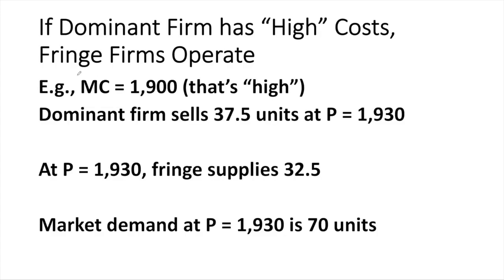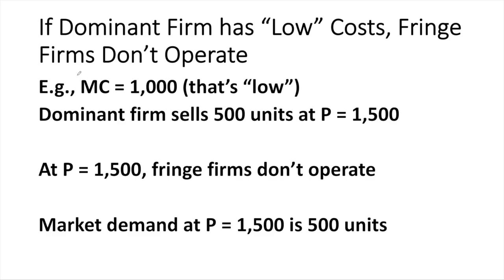To summarize: if the dominant firm operates at high cost — for example, MC equals 1,900 — it sells 37.5 units at a price of 1,930, and the fringe supplies 32.5 units. Total market demand at 1,930 is 70 units. In the low-cost case with MC equals 1,000, the dominant firm sells 500 units at a price of 1,500, and the fringe firms don't operate — all 500 units of market demand at that price are provided by the dominant firm.